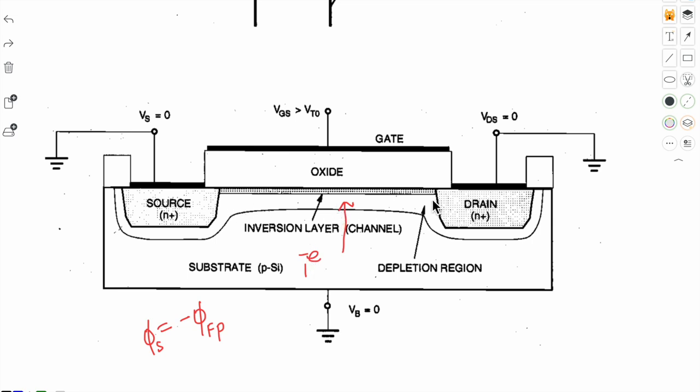In this channel current conduction is not yet starting. It will start when we apply a potential difference between source and drain. Now it has only made a path.